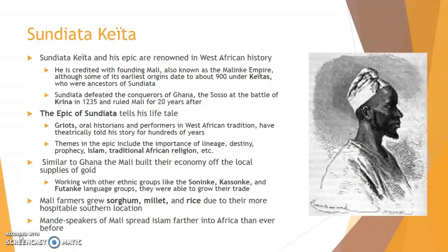Sundiata Keita and his epic are exceptional in West African history. Sundiata is credited in oral tradition with founding Mali, the West African Malinke empire that succeeded ancient Ghana, although some of its earliest origins date back to about 900 CE under the Keitas, who were his ancestors. Mali, or Malel as found in Arabic literature by the 800 CE, means 'where the king resides.' Sundiata defeated the conquerors of Ghana, the Sosso, at the Battle of Krina in 1235, and ruled Mali from 1235 to 1255.